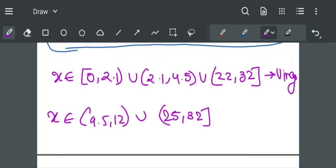For Liala, x belongs to 4.5 to 12 union 25 to 32. For Vinay, x belongs to 0 to 2.1 union 2.1 to 4.5 union 22 to 32.